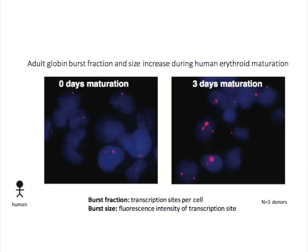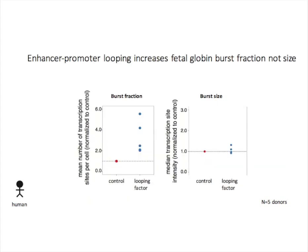As I mentioned earlier, all the above experiments were carried out in a mouse cell line. I also repeated these experiments in primary human cells to examine if the molecular regulation of globin transcriptional bursting is conserved. I isolated precursor cells from human blood and differentiated them into red blood cells. Globin burst fraction and burst size increased during maturation in human cells, like in mouse cells. And if we expressed a similar looping factor to force enhancer-promoter contact in human cells, we again increased burst fraction of globin, but not burst size.